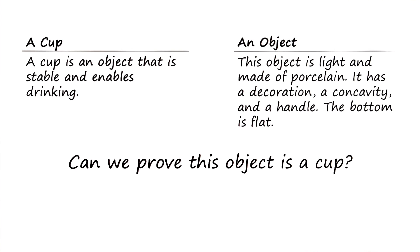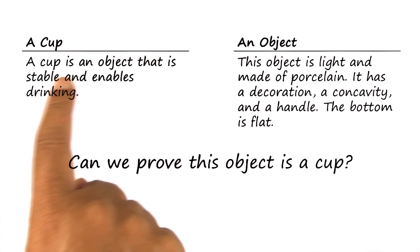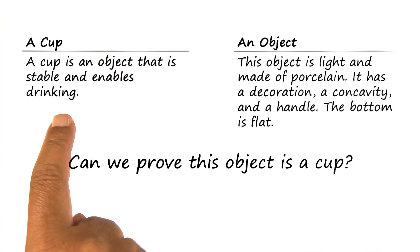Imagine again that you have bought a robot from the Acme hardware store, and in the morning you tell the robot to go get you a cup of coffee. The robot is already bootstrapped with knowledge about the definition of a cup: a cup is an object that is stable and enables drinking.